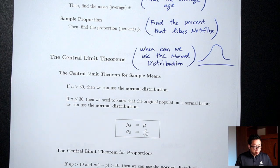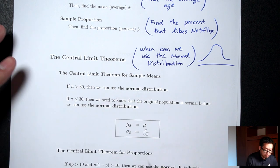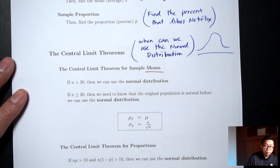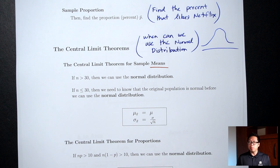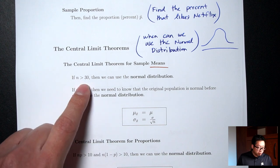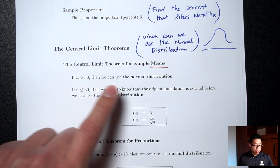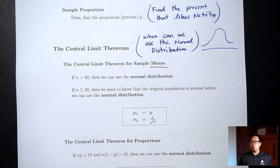For the mean situation, we talked about this last time. If your sample size is large enough, then yes, you can use the normal distribution. Large enough means bigger than 30. So if your sample size is bigger than 30, you can use the normal distribution regardless of what the original population looks like.